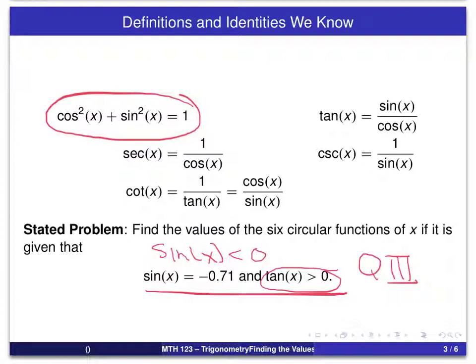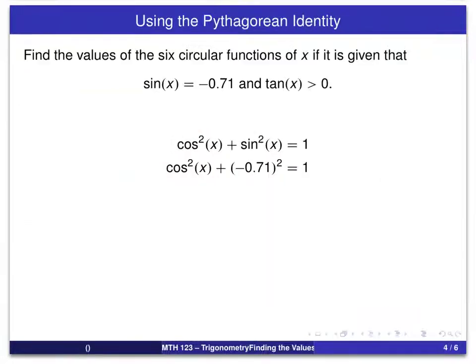So the arc x lies in quadrant 3. And that will help us determine the sign that we use with our square root for cosine. Here's the setup for determining the value of cosine. We've started with the Pythagorean theorem and have substituted in the value for sine of x. As we go through this computation, we will see that cosine squared of x will be equal to 1 minus 0.5041, which is equal to 0.4959.